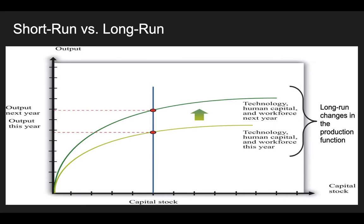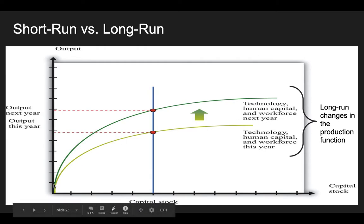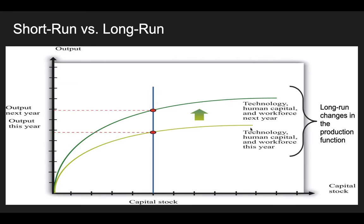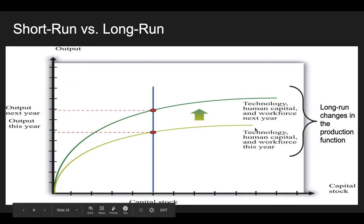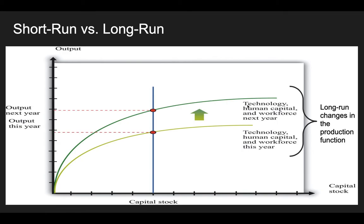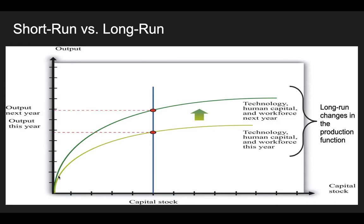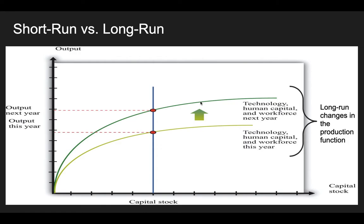As I showed you in section 3.1, if we look at the bottom output curve here, this is a product curve representing one year's productivity. But if in an entire year we can add technology and human capital and a larger workforce and all those things, in the long run we can increase that overall output or overall potential production.